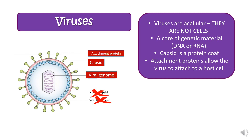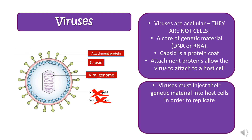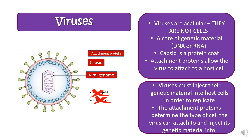On the outside we have attachment proteins, which allow the virus to attach to a host cell. Viruses must inject their genetic material into a host cell — for example a human cell — in order to replicate, because they cannot replicate by themselves; they cannot undergo mitosis or cell division. Because attachment proteins are proteins, they have a specific structure, and the type of attachment protein determines which cell the virus can attach to. This means many viruses can only attach to specific cells, and the cells they attach to determine the symptoms of that viral disease.